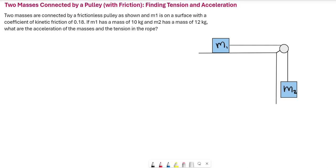In this problem we're going to look at a classic example with forces and pulleys where we have two masses — one is on a surface and the other is hanging over the edge. We have two masses connected by a frictionless pulley. M1 is on a surface with a coefficient of kinetic friction of 0.18. M1 has a mass of 10 kilograms and M2 has a mass of 12 kilograms.